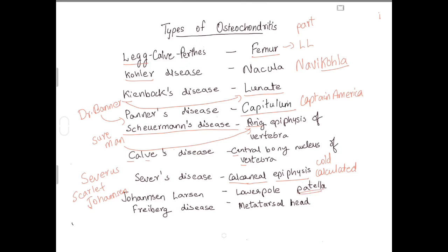Next one is Freiberg's disease. In India, FMT is a subject in second year — F, M, and T. So that is Freiberg's disease for the metatarsal.